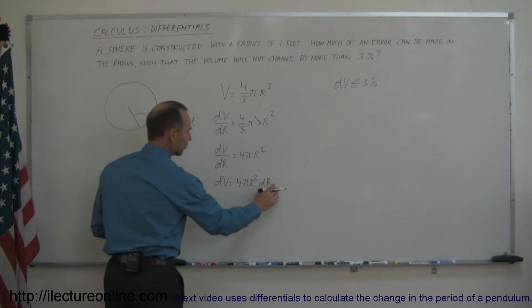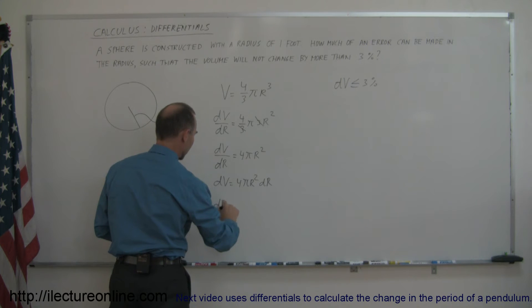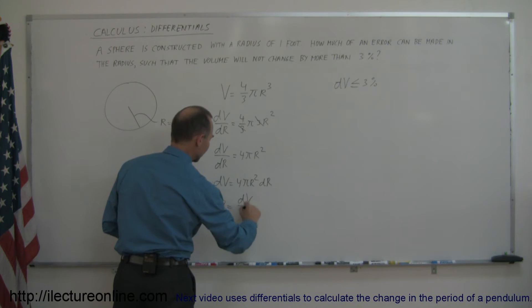And since we're looking for dr, let's solve this equation for dr. So we can say that dr is equal to dv divided by 4 pi r squared.